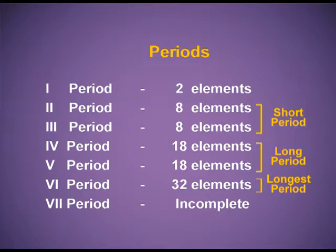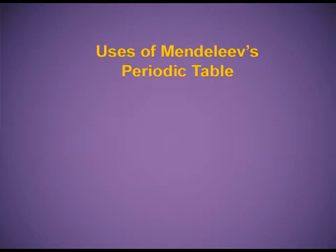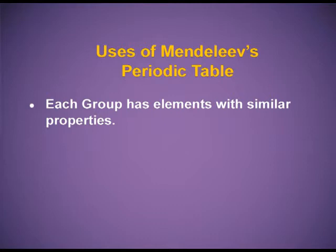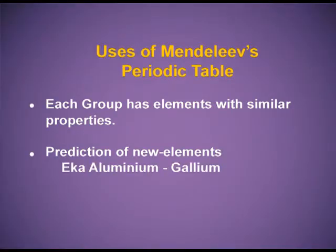Seventh period has thirty-two elements but is still incomplete. The uses of Mendeleev's periodic table: each group has elements with similar properties, and it facilitated the study of all the elements. Prediction of new elements — at the time of Mendeleev, there were few elements which were undiscovered, but Mendeleev successfully predicted these elements and left vacant spaces in his periodic table. For example, Eka-Aluminium, which is nowadays Gallium, and Eka-Silicon, which is nowadays Germanium. Both elements were very rightly predicted. Doubtful atomic weights were also corrected.